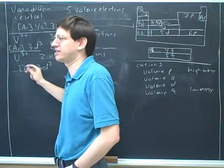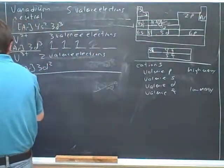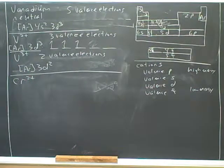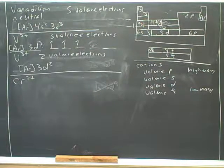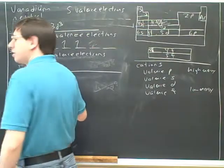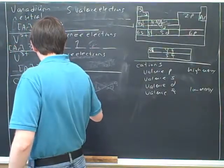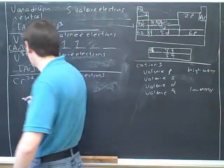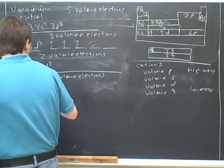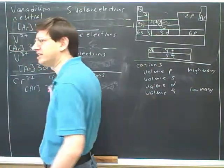Let's try chromium 2 plus. The key is how many valence electrons does it have? Four, because neutral chromium will have 6 and it's lost two. Where are we going to put the four electrons? Not in the s block, in the d block.